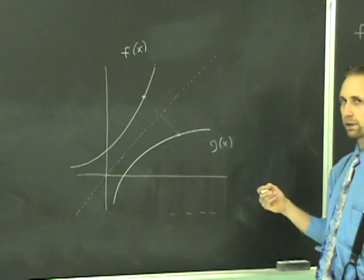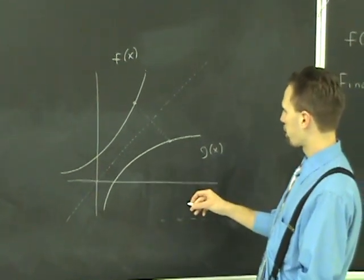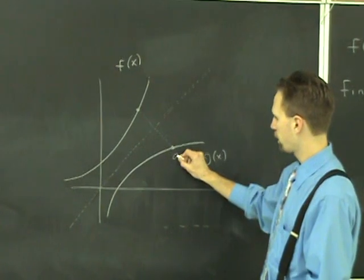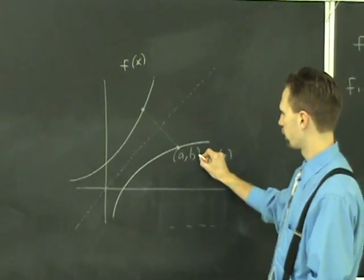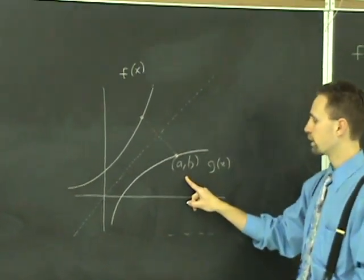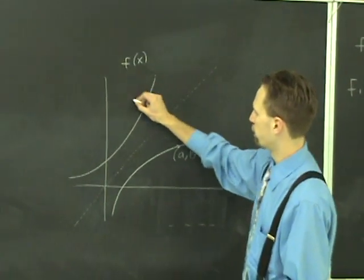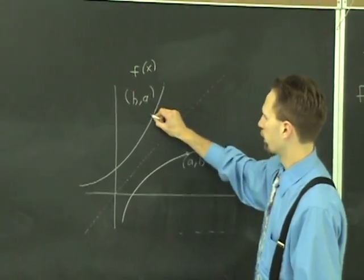And so what about the tangent lines here? Well, first of all, if there's a point A comma B, say, on g of x, then that means that there must be the point B comma A on f of x.